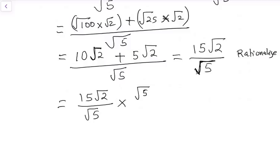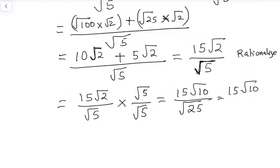That way we are going to have 15 root 10 over square root of 25. 15 root 10 will give us, square root of 25 is 5.